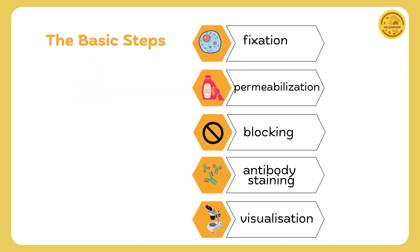Let's break down the basic steps of immunocytochemistry. It starts with fixation to preserve the cells, then permeabilization to allow antibodies to enter. After that, we block non-specific sites, apply primary and secondary antibodies, and finally visualize the results.